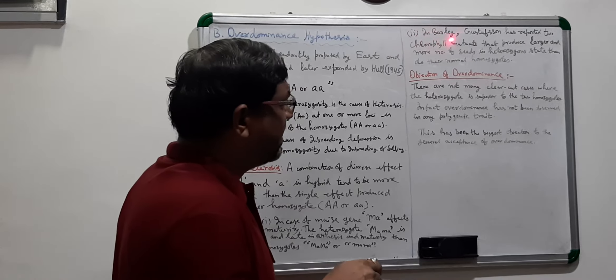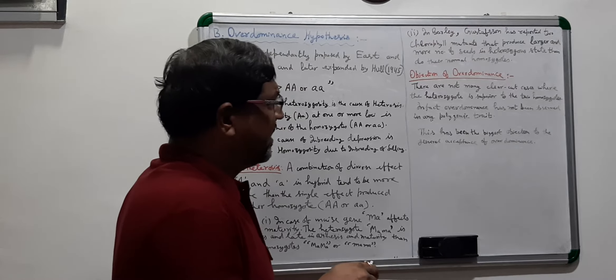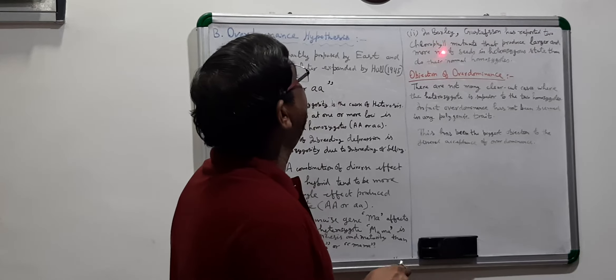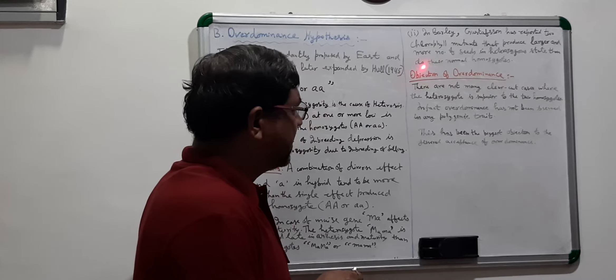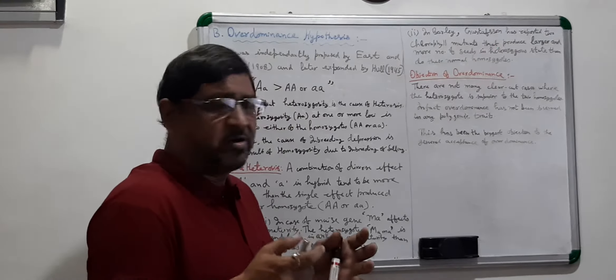Another example is in barley, where Gustafson reported two chlorophyll mutants that produce larger seed size as well as more number of seeds — both together — in the heterozygous state, compared to their normal homozygotes. This is the example in barley where heterozygotes in the mutant heterozygous condition are superior to both the homozygotes.